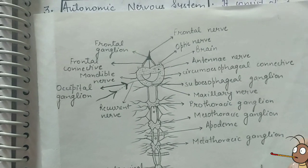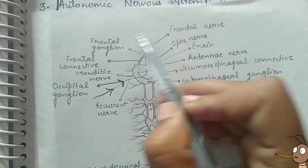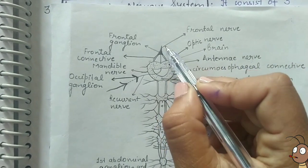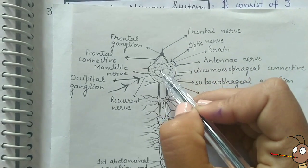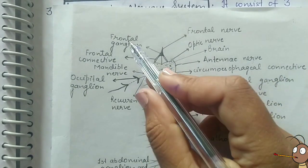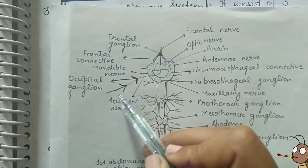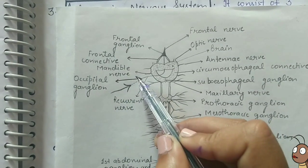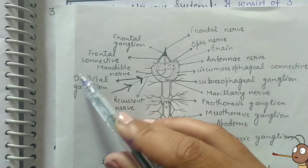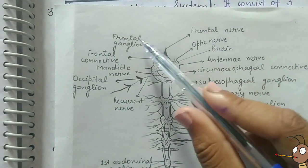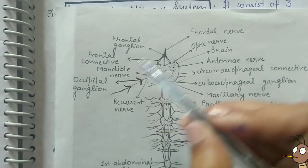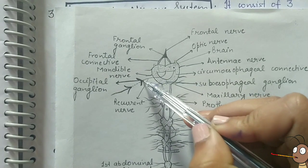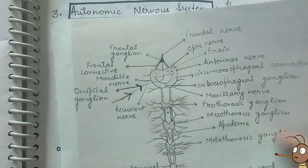The frontal ganglion is further divided into the frontal nerve — a forward-going nerve — and the backward-running recurrent nerve. So the frontal ganglion gives rise to the frontal nerve and the recurrent nerve, and the recurrent nerve joins the occipital ganglion.